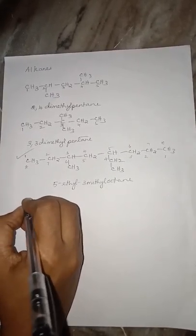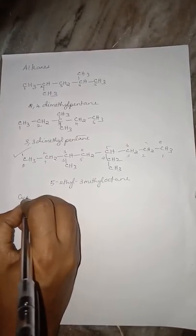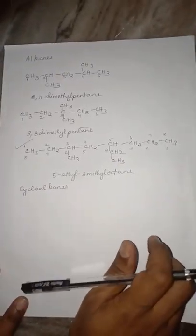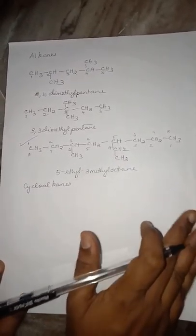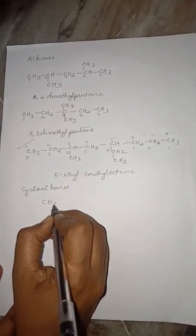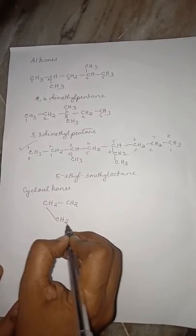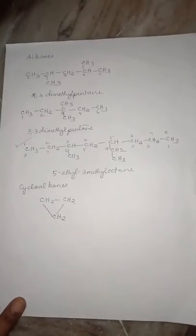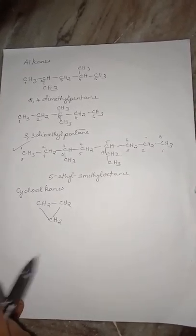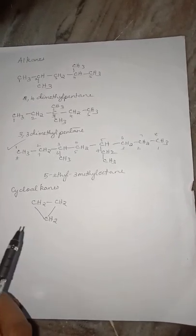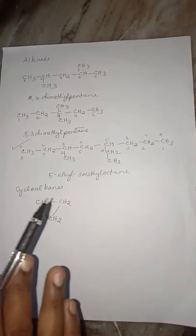Now let us name cycloalkanes. Cycloalkanes are alkanes in which carbon atoms are arranged in a ring. We name them by attaching the prefix 'cyclo' to the name of the alkane.